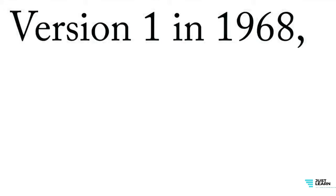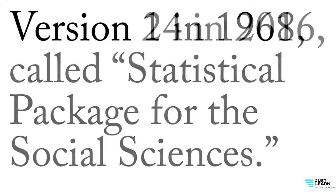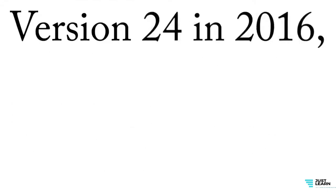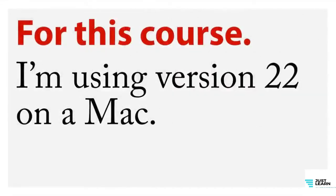Version one came out in 1968, and at that point it was called Statistical Package for the Social Sciences, SPSS. Version 24 came out in 2016, and now it's called IBM SPSS Statistics — they act like SPSS doesn't stand for anything. For this course, I'm using version 22 on a Macintosh computer. There haven't been any extraordinarily major changes between 22 and 24, and everything I'm going to show you will work just fine in almost any other version of SPSS.